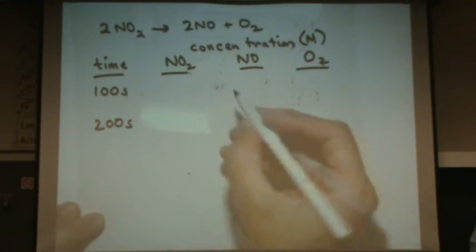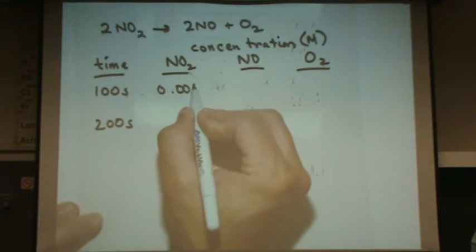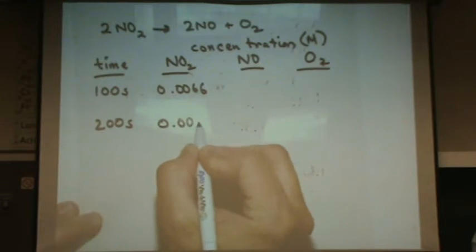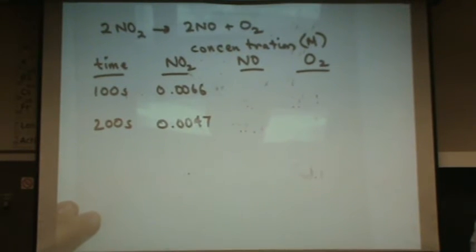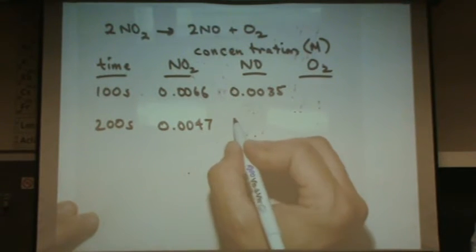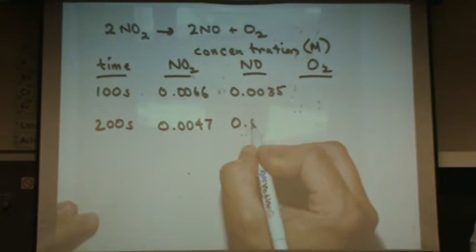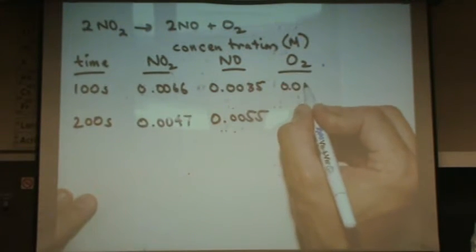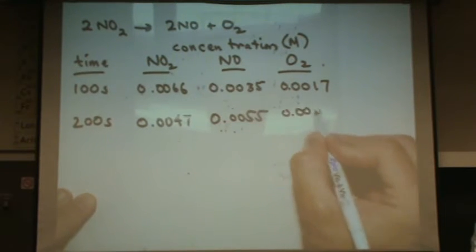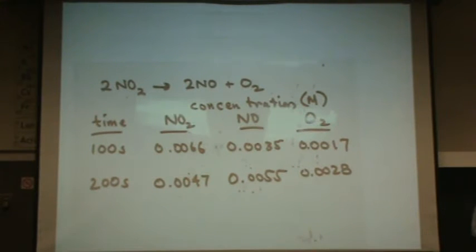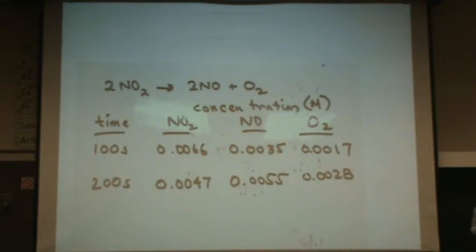So at 100 this is 0.0066. And it's dropping over time. So it gets smaller here, 0.0047. The NO is 0.0035. This is gaining over time. It's a product. 0.0055. And for the O2, it's 0.0017 and 0.0028. So that one's gaining over time as well because it's also a product. So these are all from the graph that I had just showed you. Now let's find the rates of reaction here.